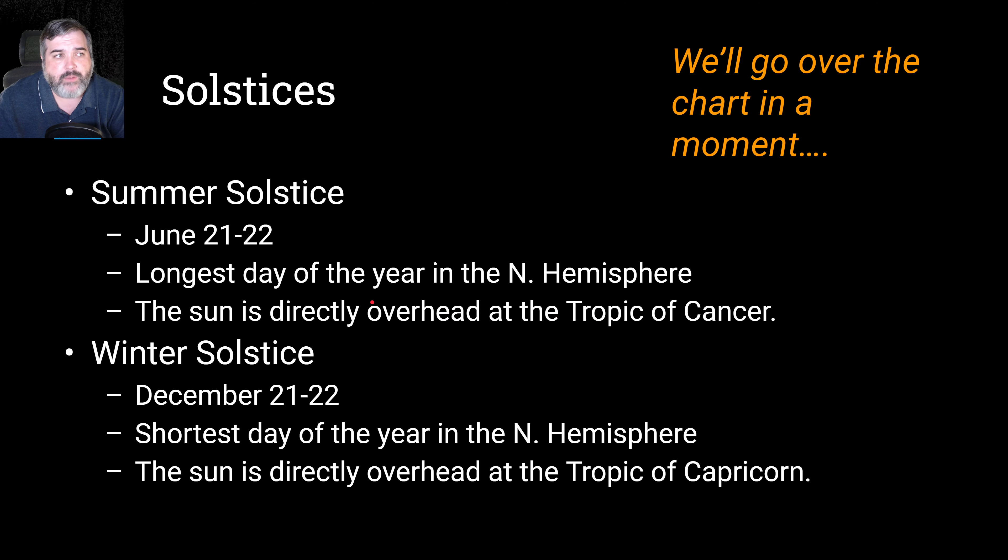The solstices come from the words meaning sol for sun, and stis actually means to stand still. So the idea is that in the summer solstice, which is the longest day of the year for the northern hemisphere, the sun seems to stand still because it's taken so long to go across the sky that day, which is June 21st, 22nd. The sun is directly overhead, 23 and a half degrees north of the equator at the Tropic of Cancer. The winter solstice, which is December 21st, 22nd, is the shortest day of the year for the northern hemisphere, but the longest day of the year, I'm sorry, I thought I had that on mute, but the longest day of the year for the southern hemisphere. Shortest day for us, longest day for them. And the sun is directly overhead at the Tropic of Capricorn, which is 23 and a half degrees south of the equator.